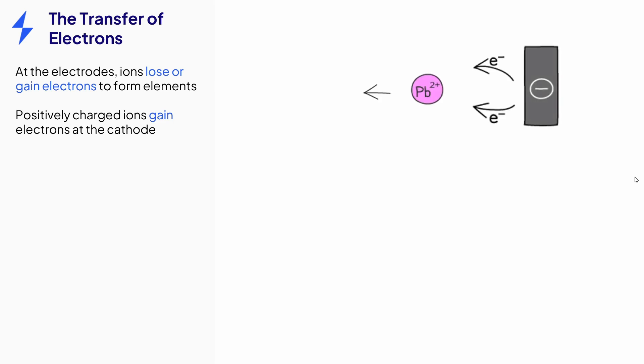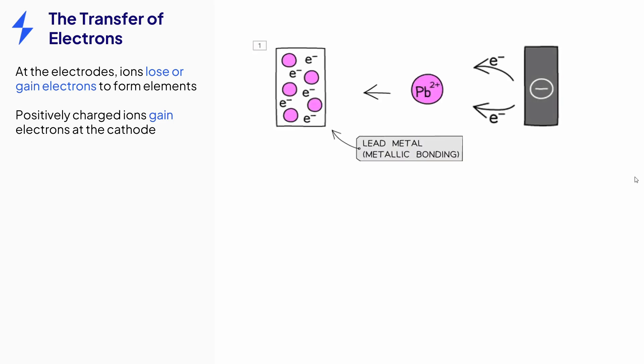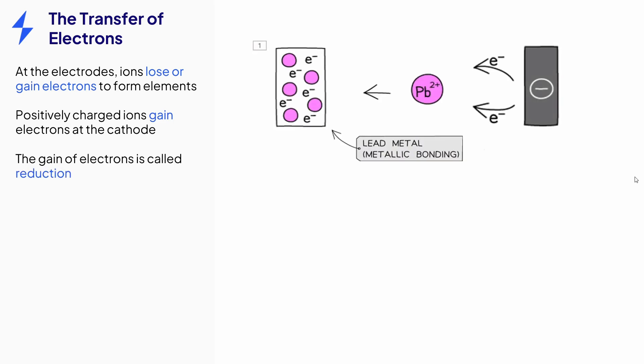For example, during the electrolysis of lead bromide, the positively charged lead ions will gain electrons at the cathode to form the metal lead. The gain of electrons is known as reduction, and the lead ions are said to have been reduced.